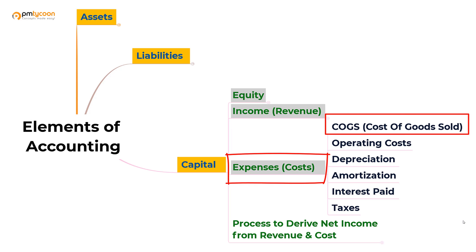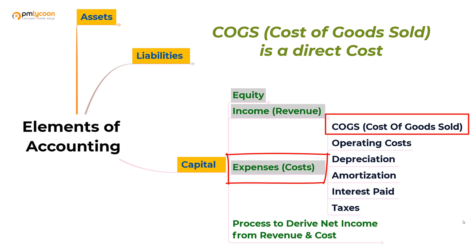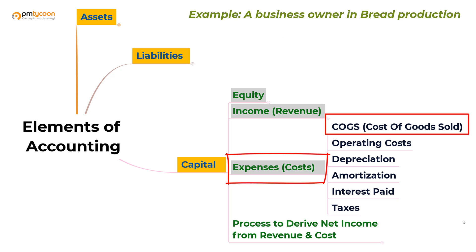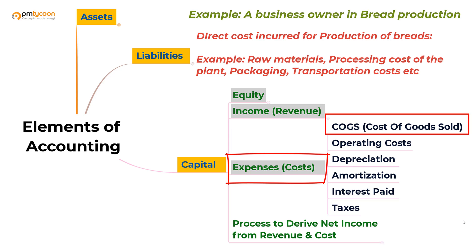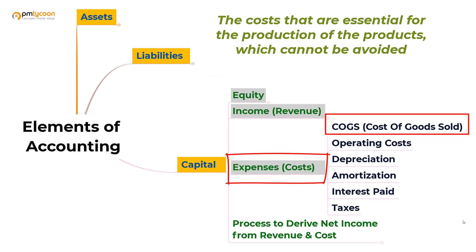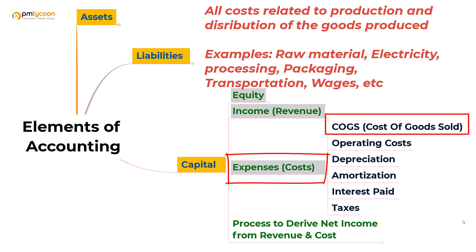Let's start with COGS — Cost of Goods Sold. This is called a direct cost for selling the goods, and these costs are essential. For example, if a business owner is selling bread, the costs incurred include raw materials, processing costs in the plant, packaging costs, and transportation of breads to retail shops. These costs cannot be avoided — if they are not done, they cannot produce bread and cannot sell. COGS involves all costs related to the production and distribution of goods: raw materials, processing cost, electricity cost, packaging cost, and transportation cost.